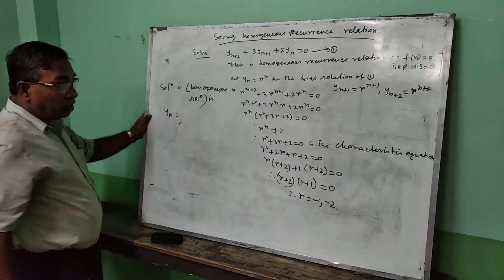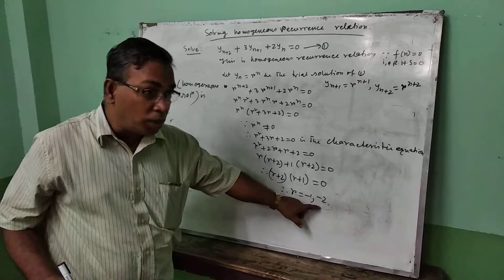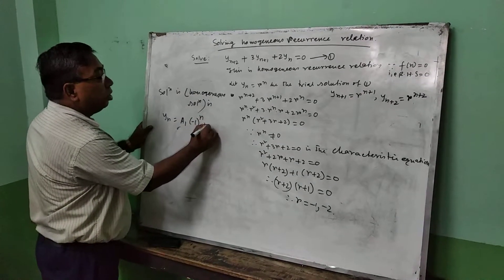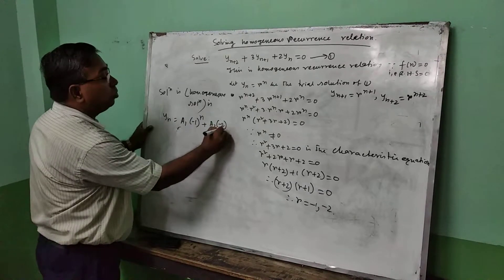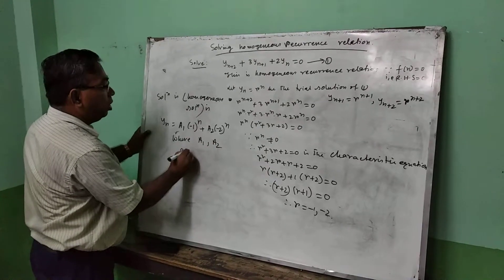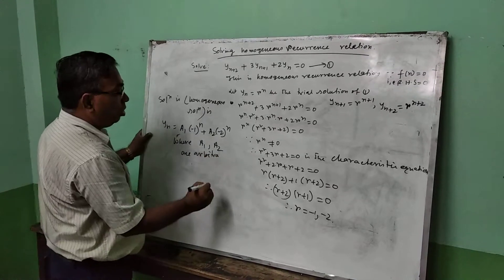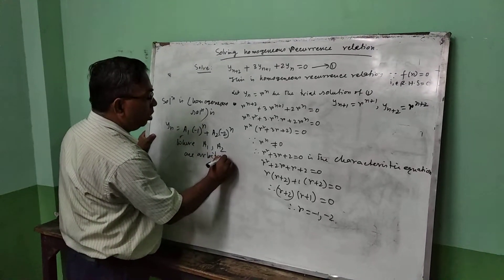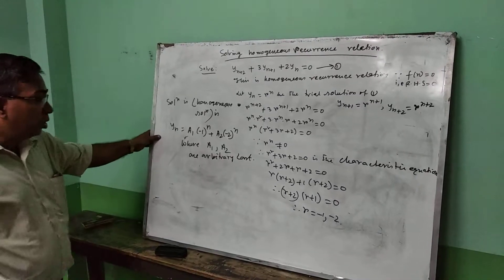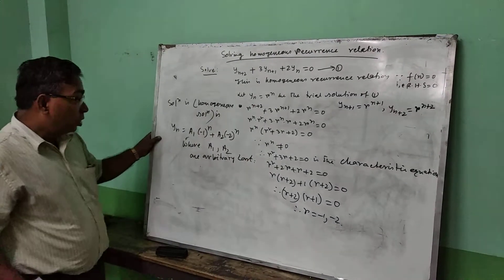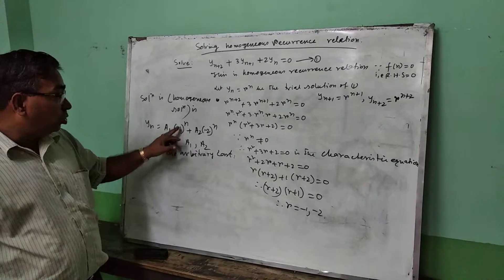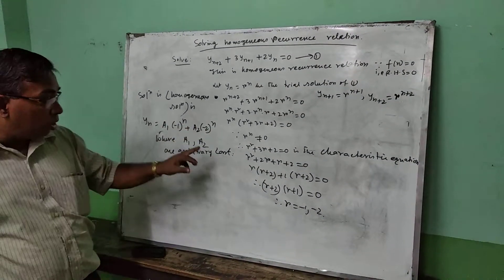y(n) = c₁·(-1)^n + c₂·(-2)^n, where c₁ and c₂ are arbitrary constants. Since the roots -1 and -2 are different, we use this form for distinct characteristic roots.